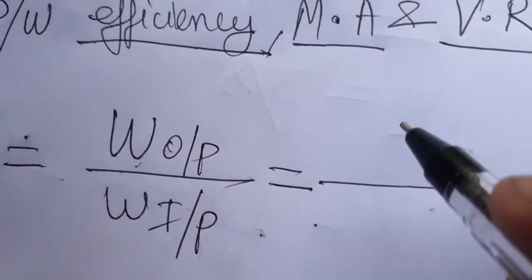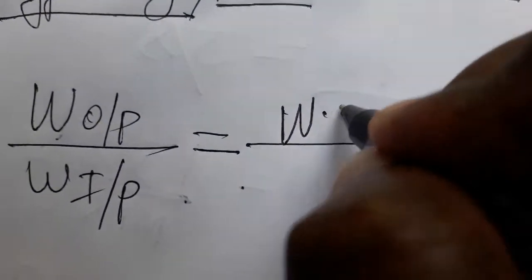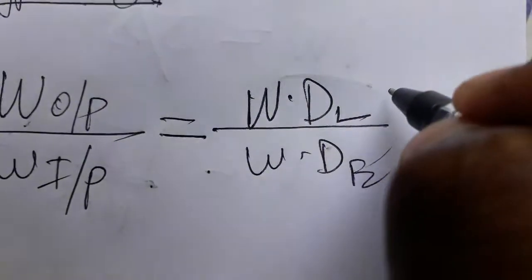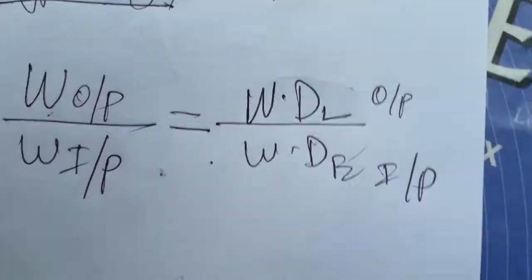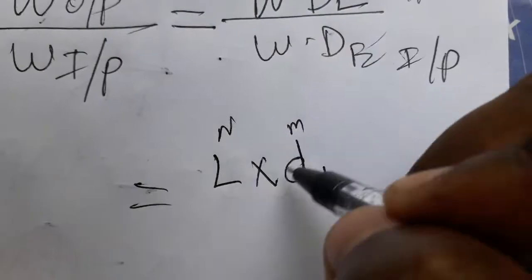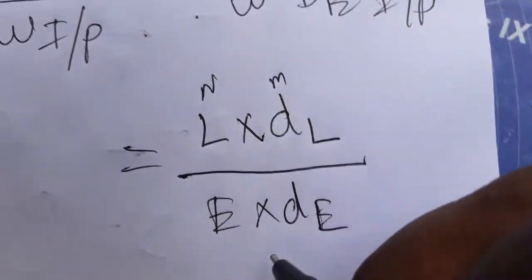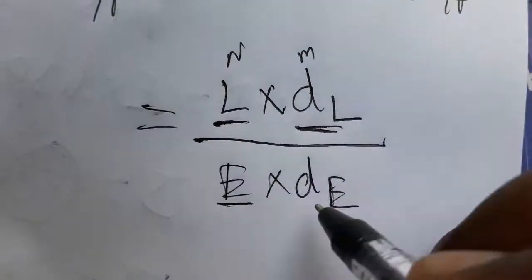Work output is the load and work input is the effort — that means force into displacement. Work done by the load is load multiplied by displacement of the load (in newton-meters), and work done by effort is effort multiplied by effort displacement. So efficiency becomes load by effort divided by effort displacement.